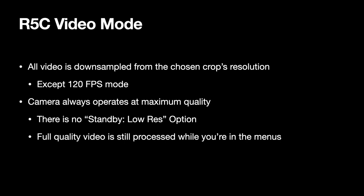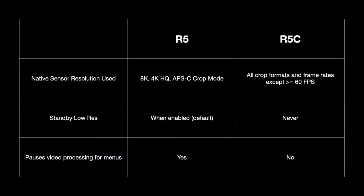The R5C always downsamples from the sensor's native resolution of the crop factor selected to the recording resolution. So if you're shooting full frame, it's always 8K getting downsampled. The only exception is when shooting at 120 frames per second, where it does use line skipping. Compare this to the R5, which only uses the full sensor resolution for 8K, 4K high quality, or APS-C crop mode, and line-skips otherwise.